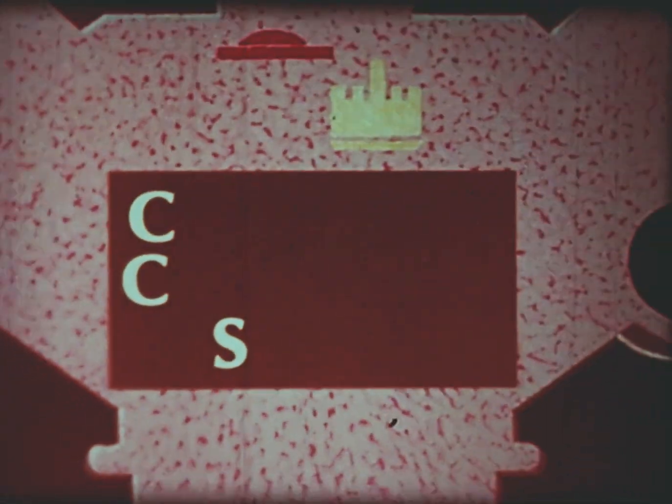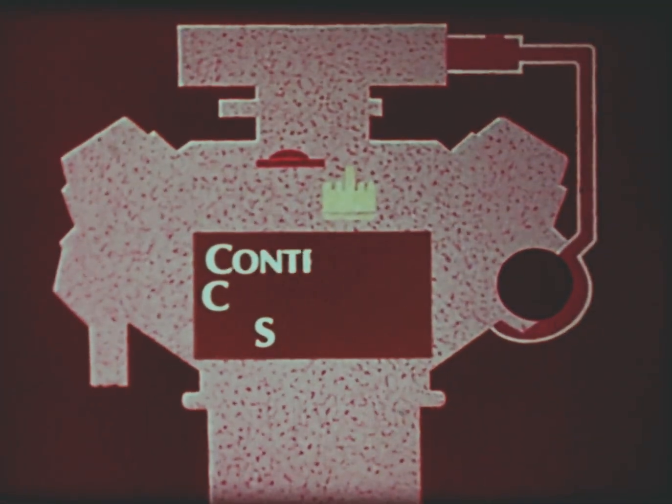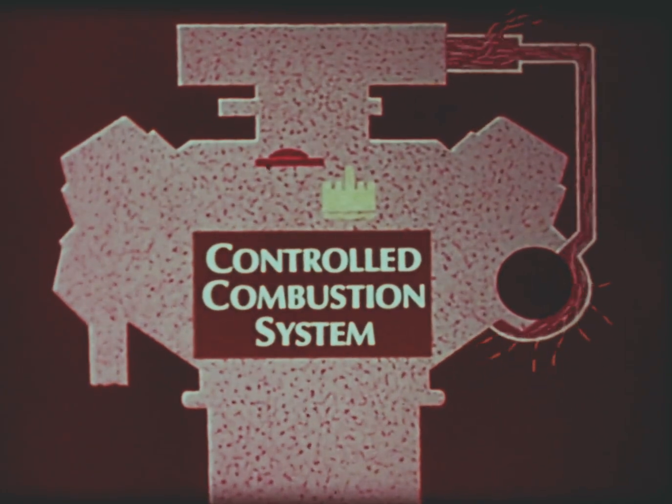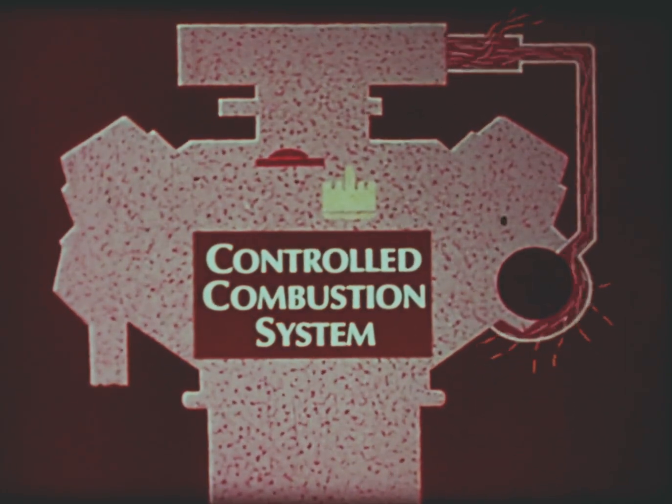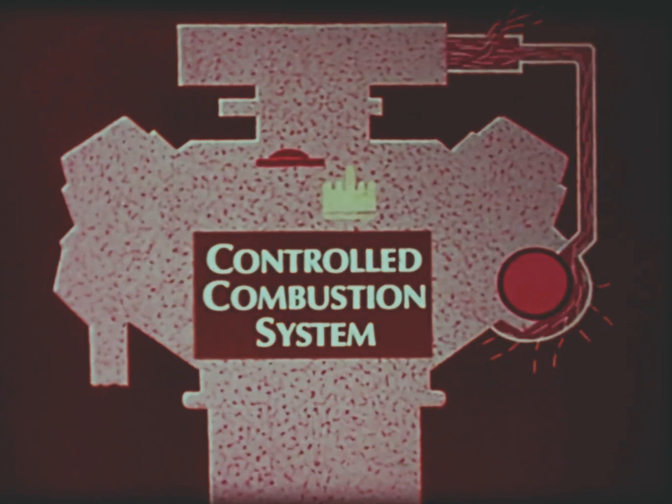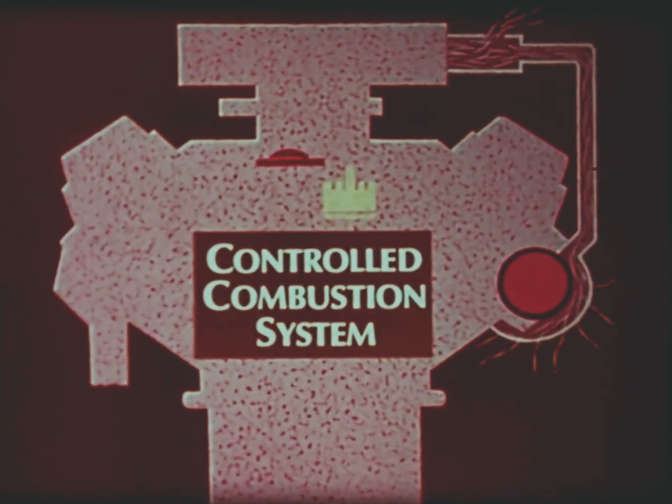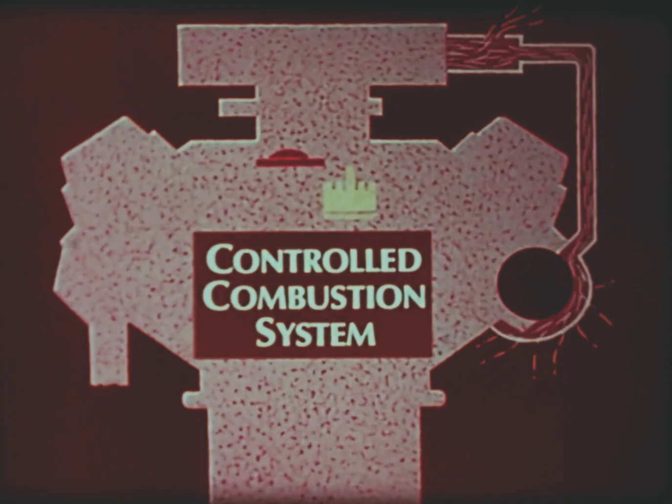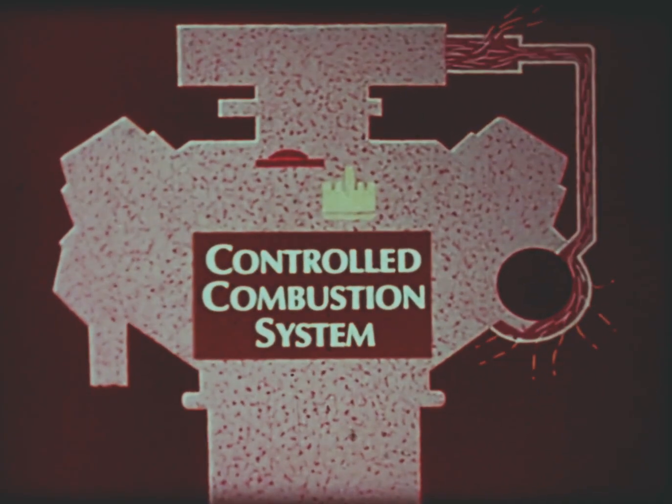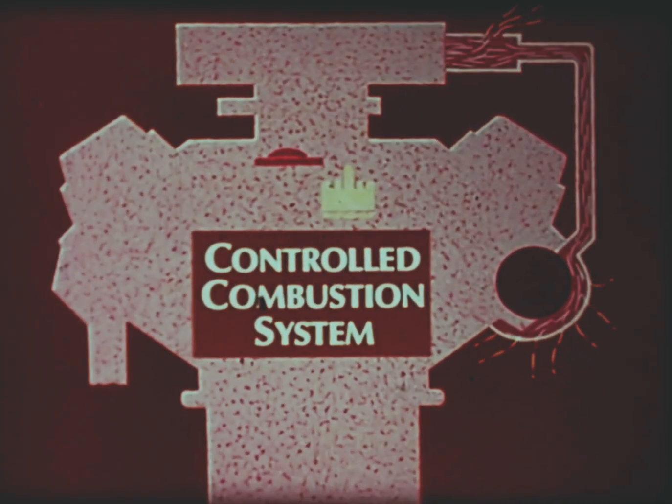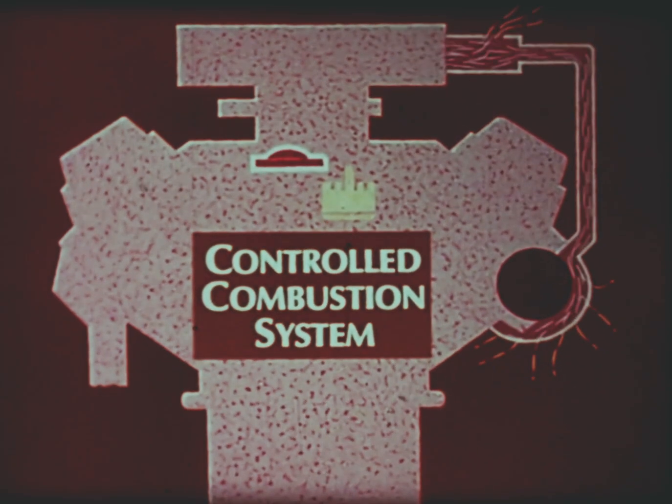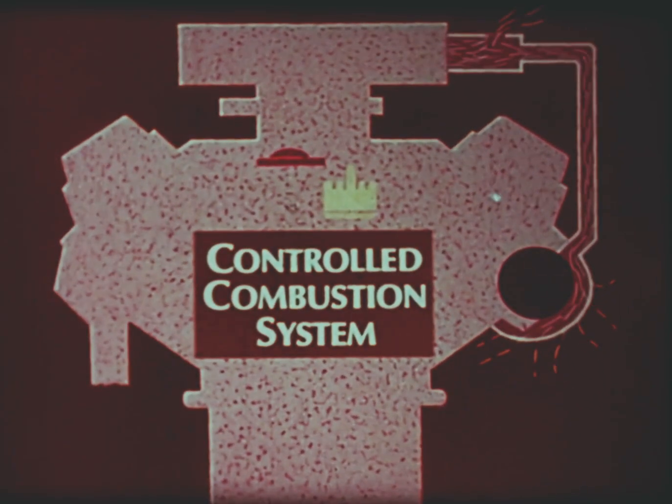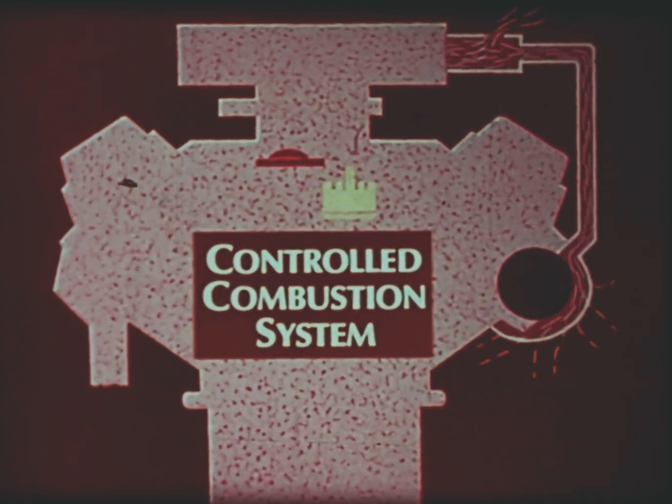Another antipollution system is CCS, the Controlled Combustion System. It provides a more complete burning of the fuel and air mixture. The hot exhaust manifold is used to heat the under hood air taken in by the carburetor. This allows the air and fuel mixture to be set leaner, which, combined with the installation of a high-temperature thermostat in the cooling system and a change in the spark timing, reduces the amount of hydrocarbons and carbon monoxide in the exhaust.